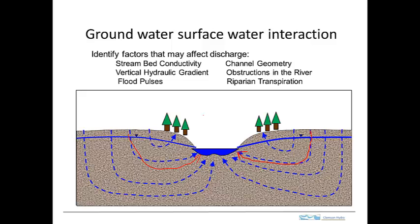The pattern and magnitude of the groundwater discharge can vary and it's affected by a variety of different processes. Certainly the hydraulic conductivity of the stream bed is important and the vertical hydraulic head gradient. If there are variations in the stage of the stream, if there's a flood pulse for example, that can cause water to flow back into the bed and reverse the flow. Channel geometry, obstructions in the river can change the head in the river and riparian transpiration. So there are a variety of factors affecting the distribution of groundwater discharge.